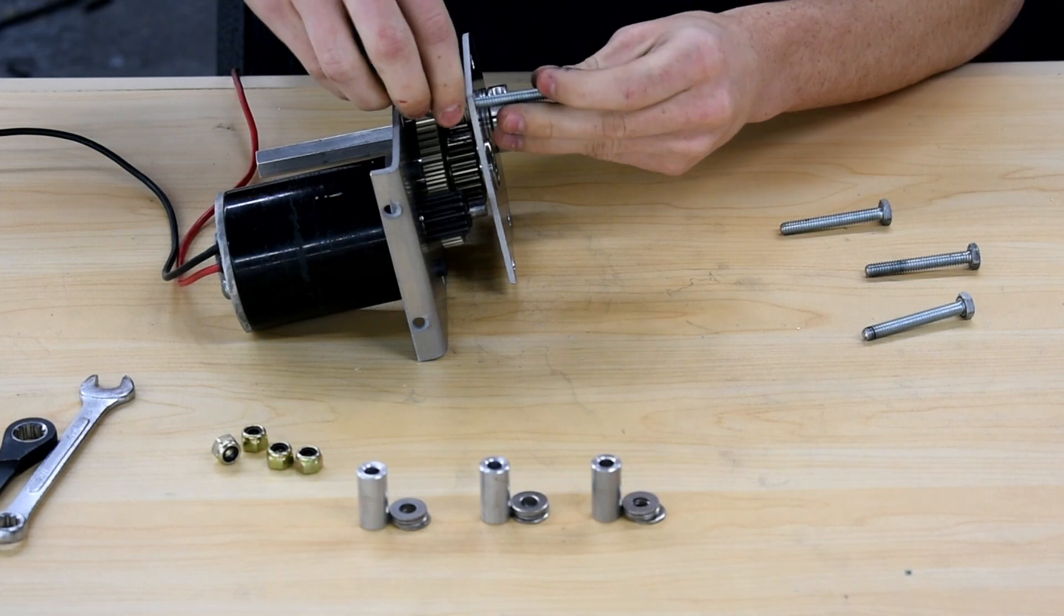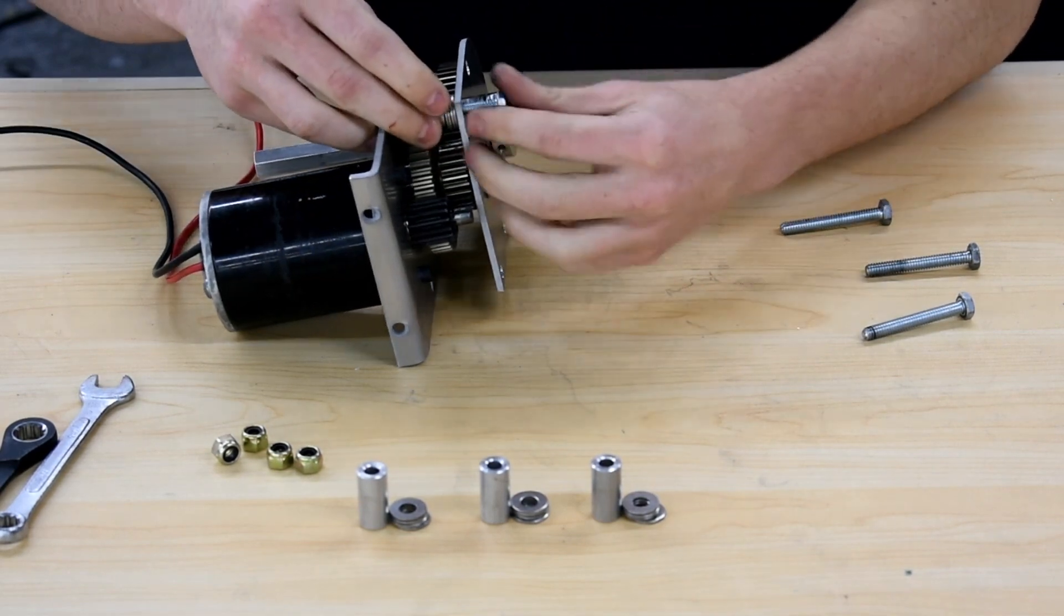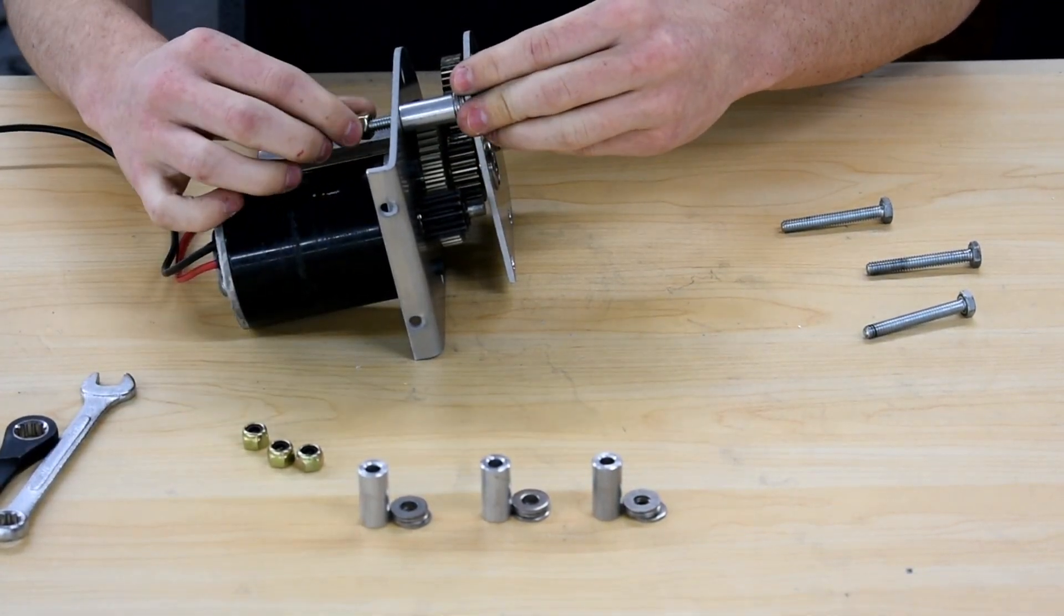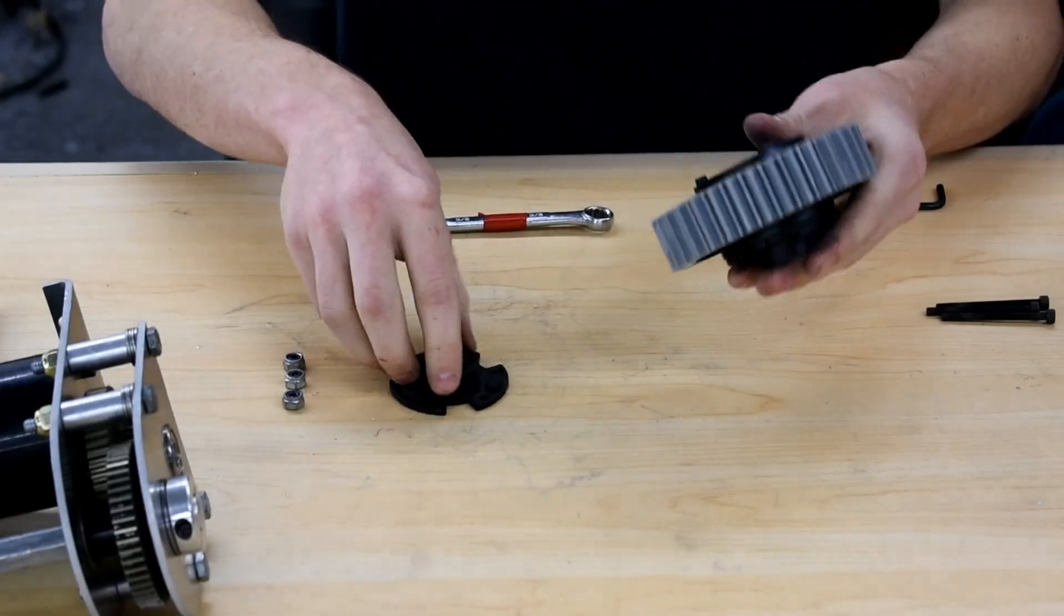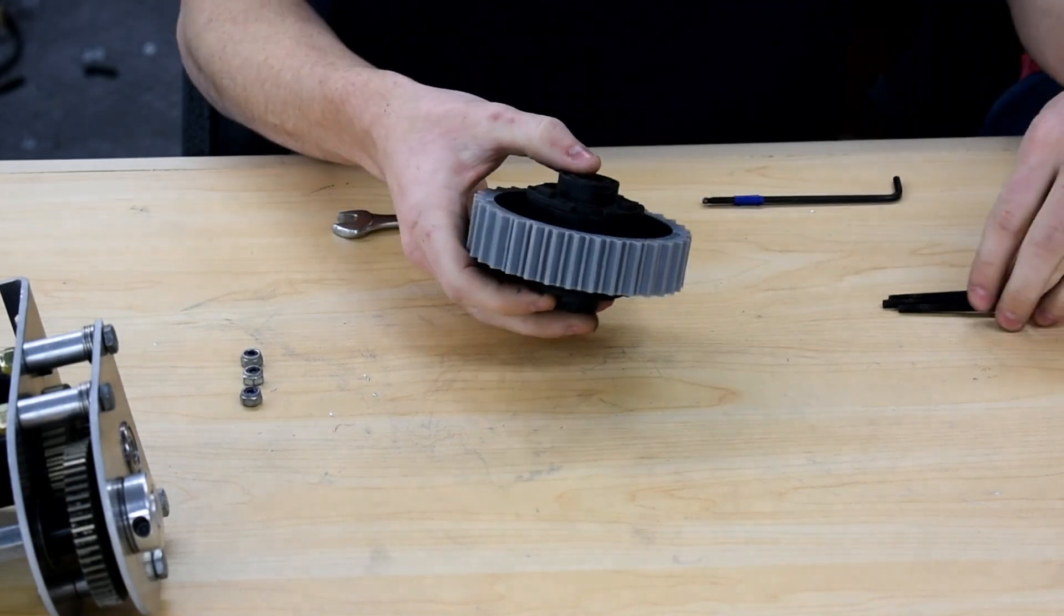1 inch spacers and a few washers are used to ensure the plates are the correct distance apart to let the gears fit properly. Test the gears to be sure that they move freely. Assemble versa hubs to wheel using 2 inch 8-32 screws.